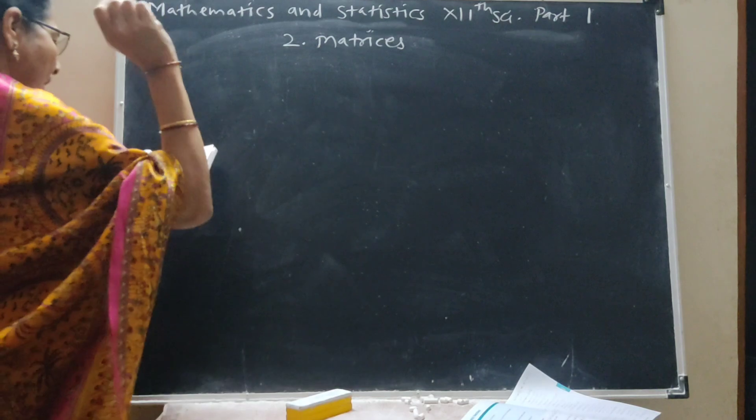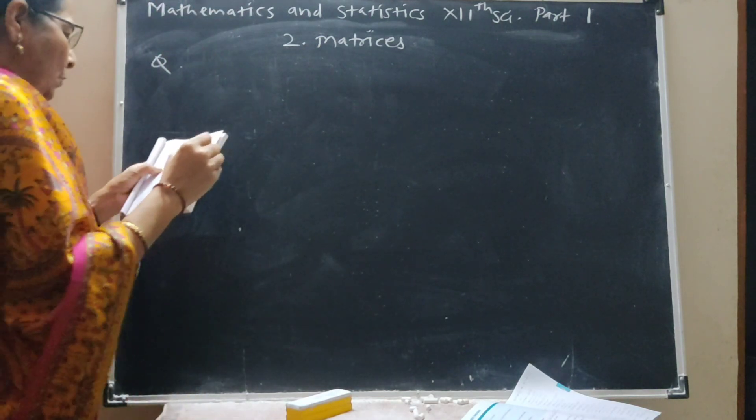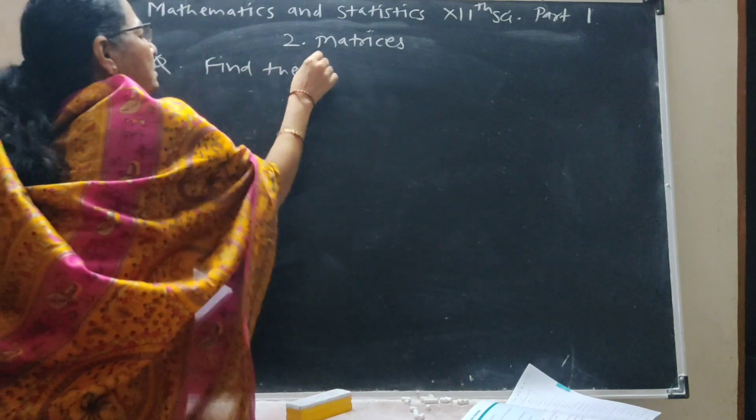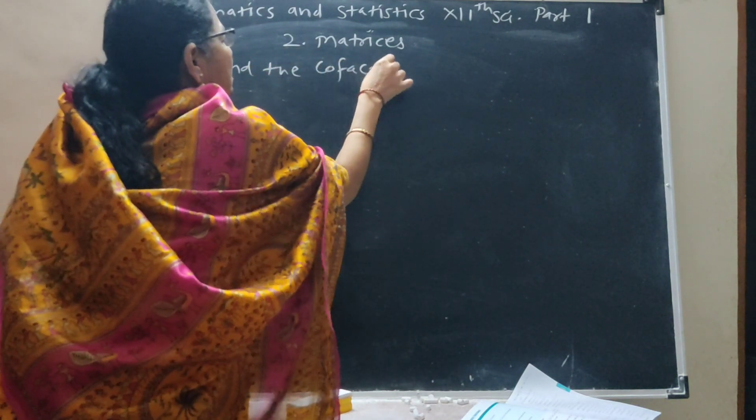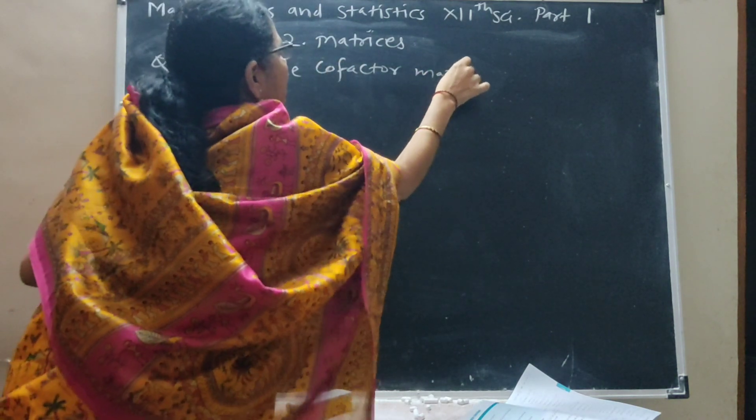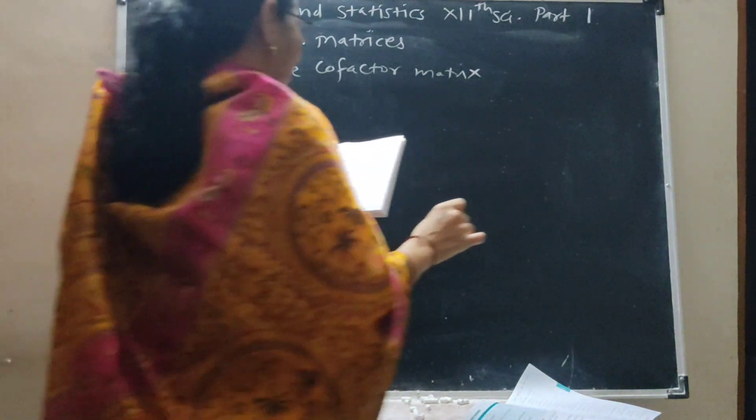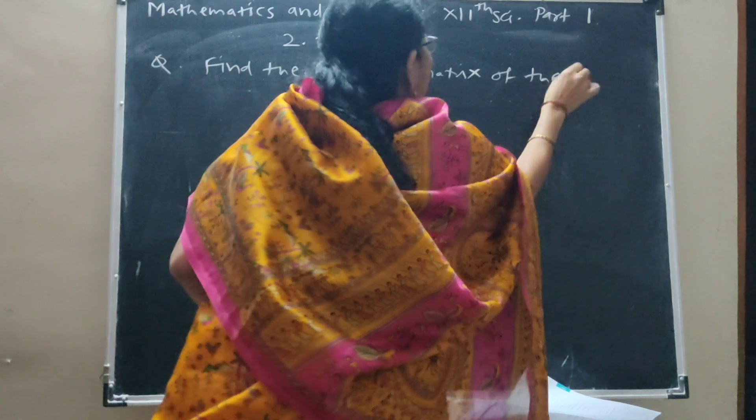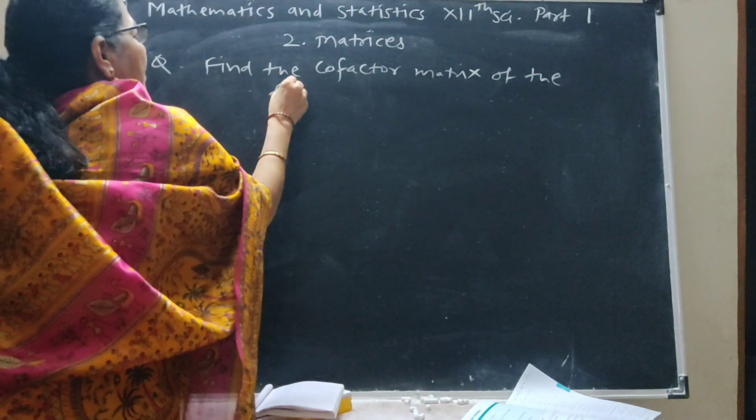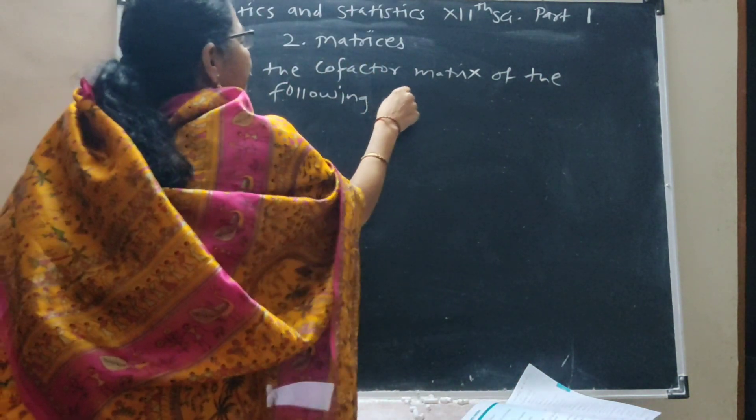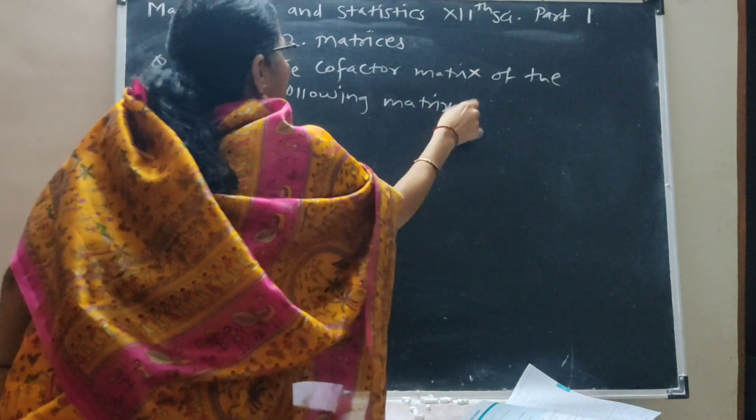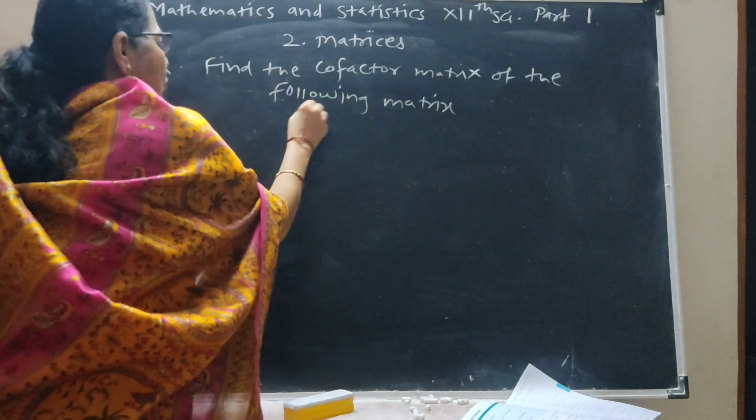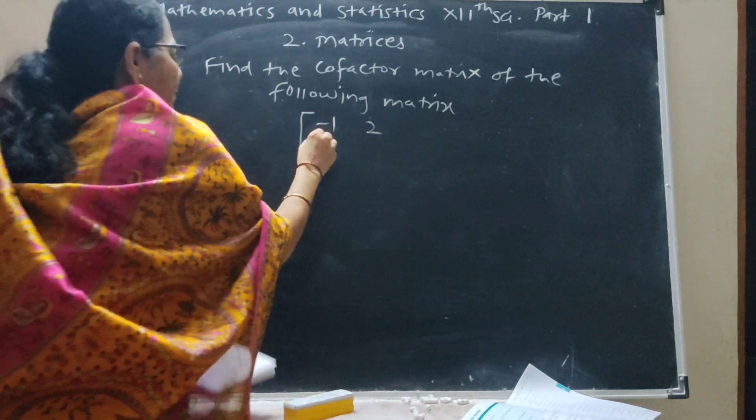Find the cofactor matrix of the following matrix. Matrix is 1, minus 1, 2 in the first row, and minus 2, 4 in the second row.